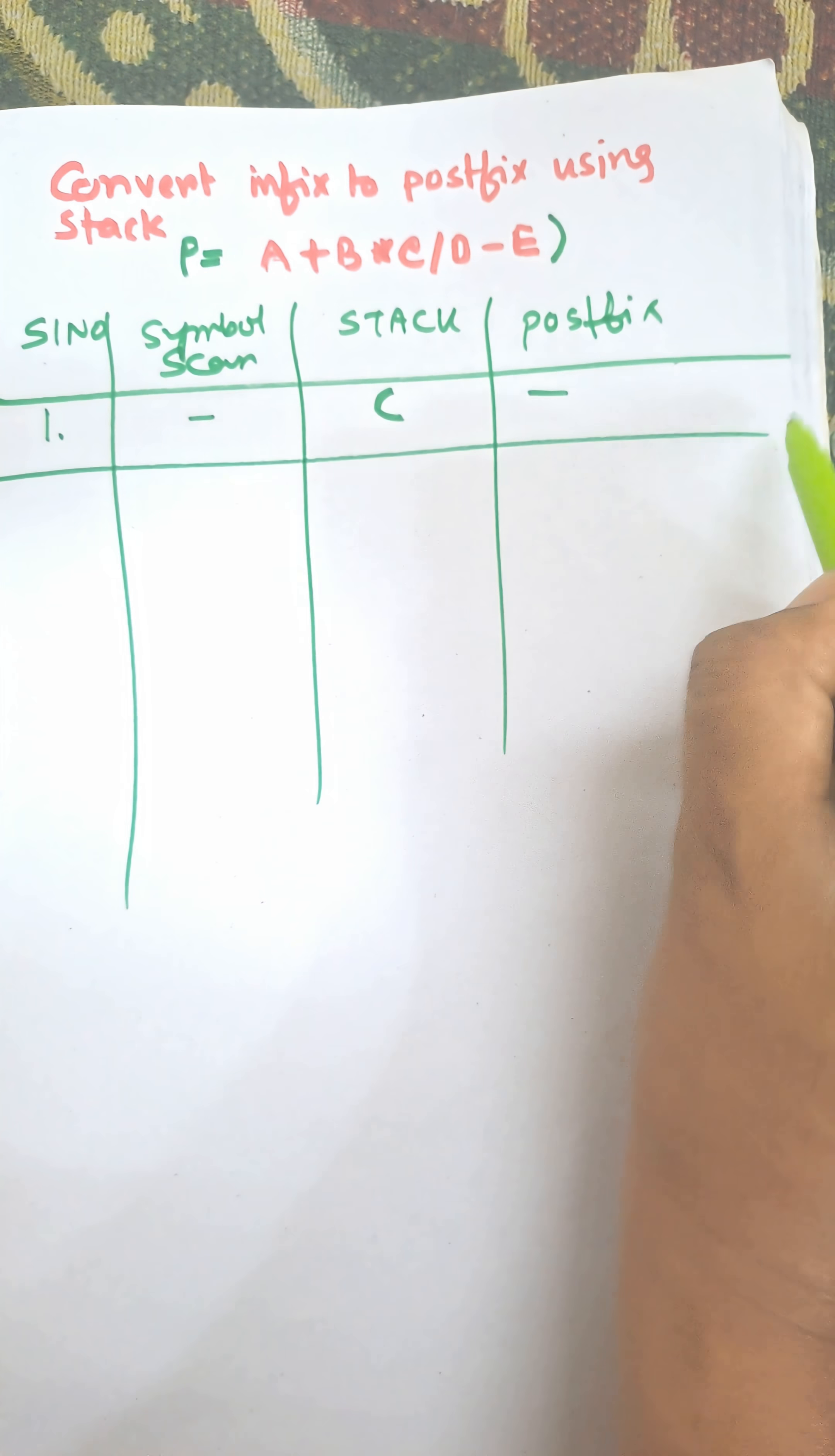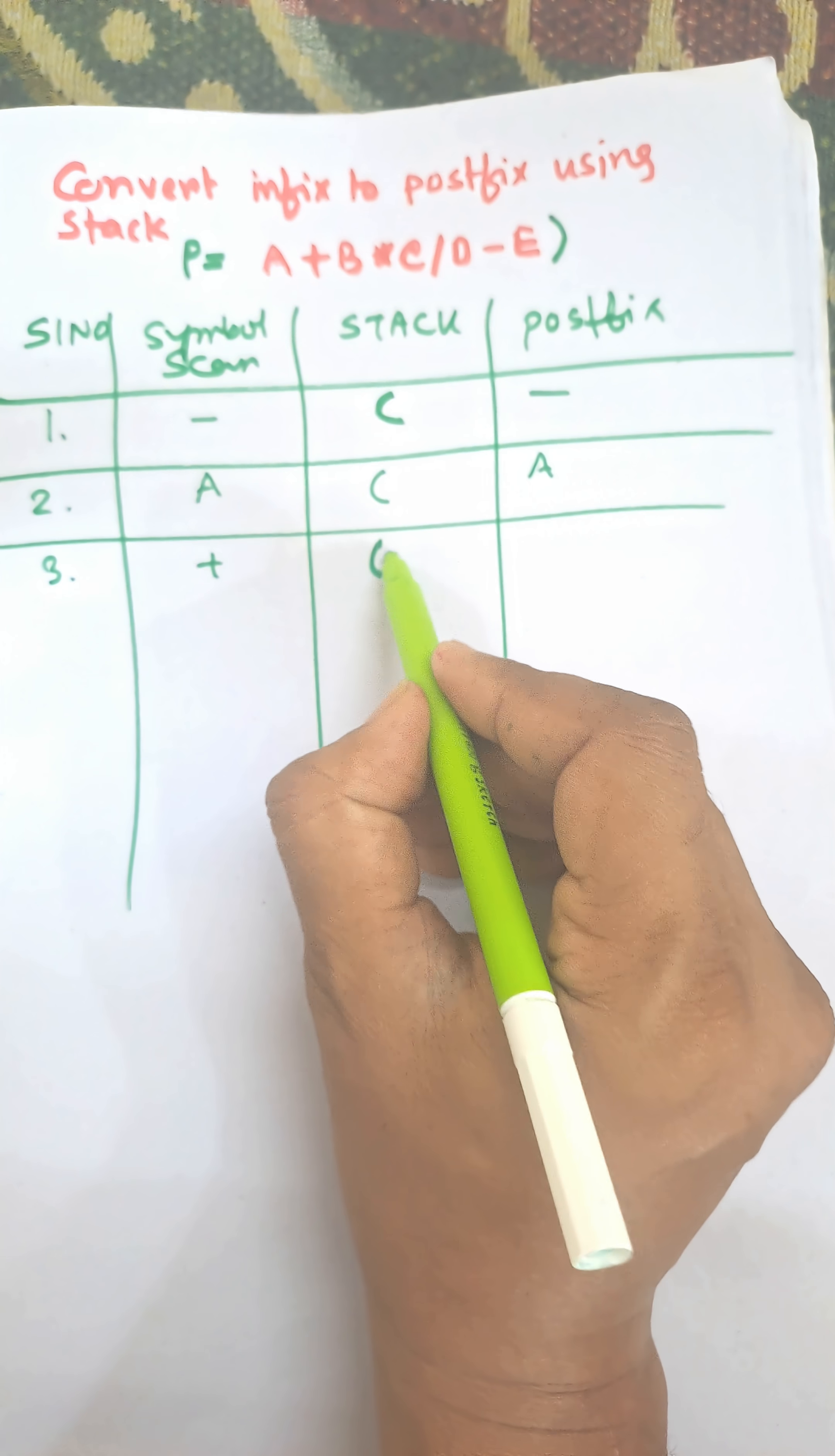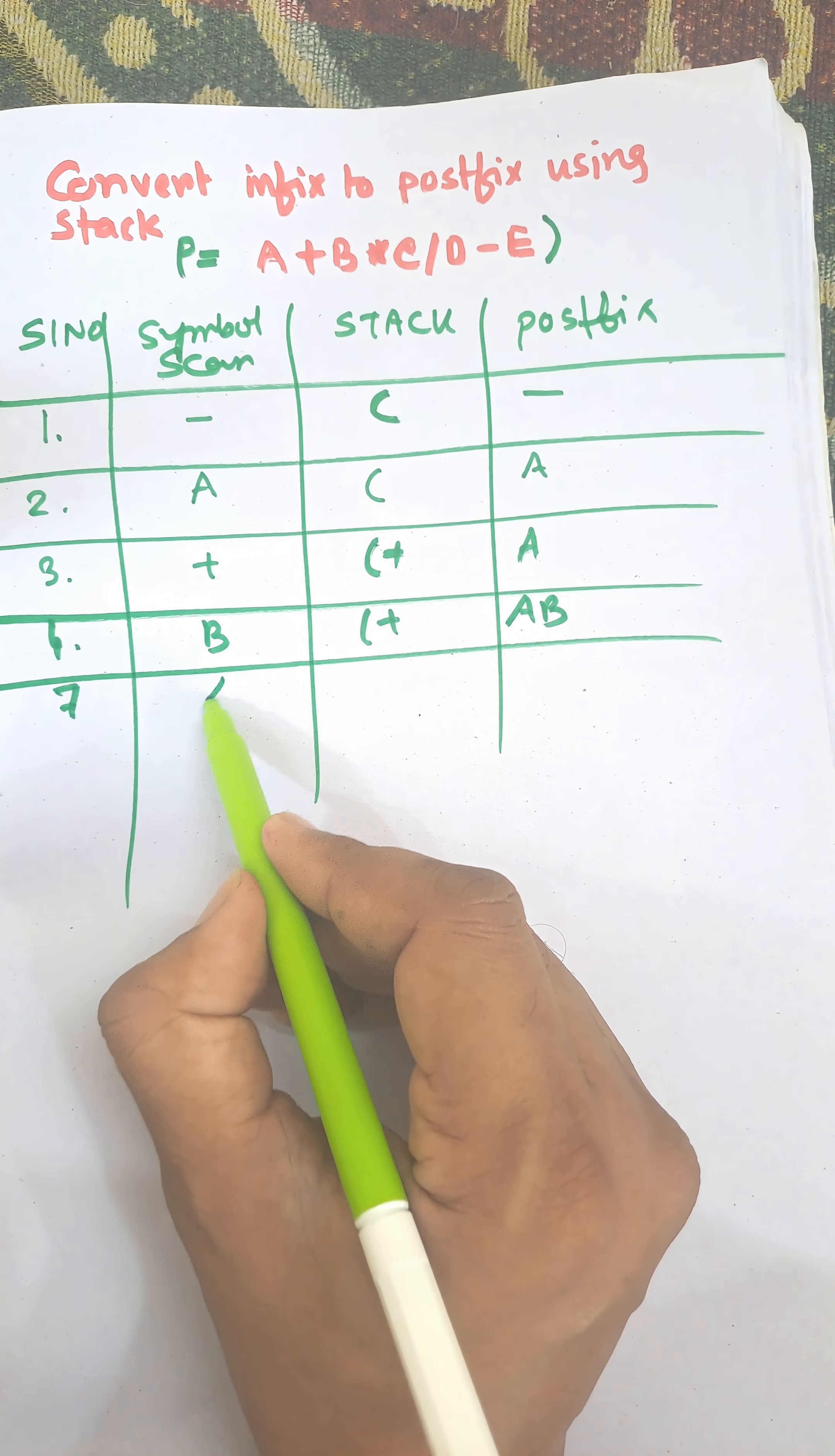For step two, we need to scan every symbol from left to right. First symbol is A and put it into the postfix. Next symbol is plus, when there is an operator put it into the stack. Next is B and then it goes to postfix. Next one is multiply and it goes to stack.